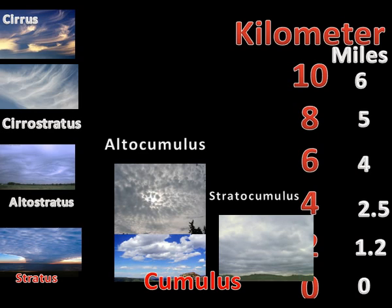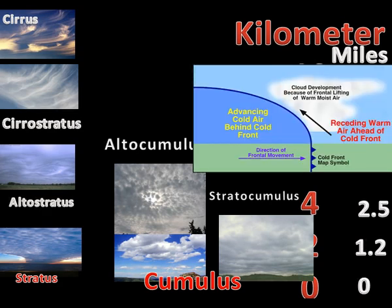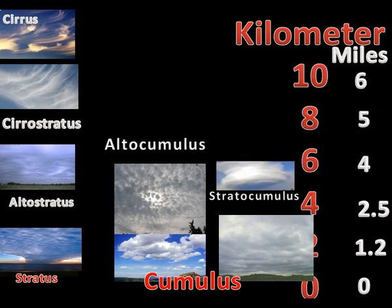Altocumulus clouds are both smaller and usually higher than stratocumulus clouds. Like other cumulus clouds, altocumulus clouds are usually white or gray and often occur in sheets or patches with wavy, rounded masses or rolls. Altocumulus often are seen preceding a cold front, and their presence on a warm, humid summer morning frequently signals the development of thunderstorms. These clouds form about 1.2 to 6.1 kilometers above ground level.